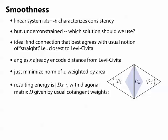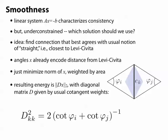which we're going to put in a diagonal matrix D. And in fact the entries of this matrix are given by just the usual cotangent formula.